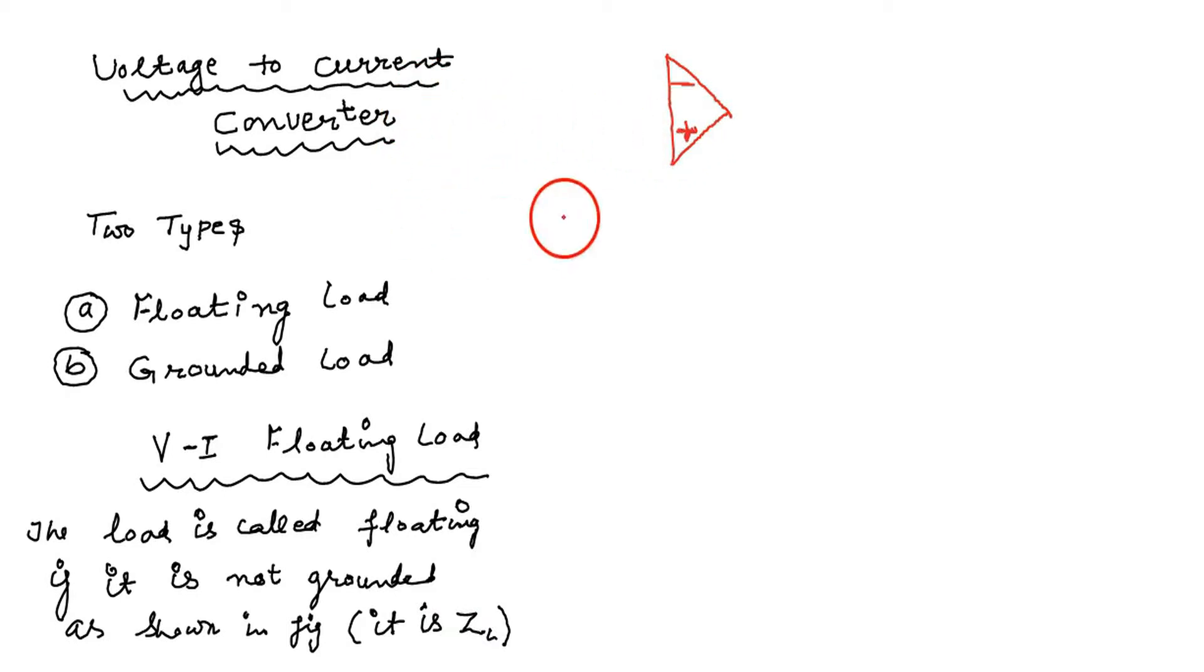This is an operational amplifier. Input signal is applied to the non-inverting terminal. That op-amp will act as non-inverting amplifier. This is an inverting terminal and load is connected like ZL here. And this is an output.